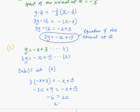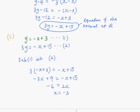So x equals to minus 3, y equals to 6. Hence, we have found the coordinate of R, whereby x is equals to minus 3, and y is equals to 6.